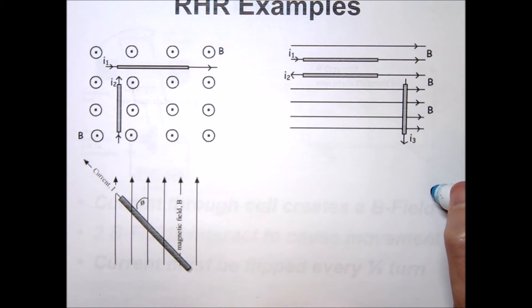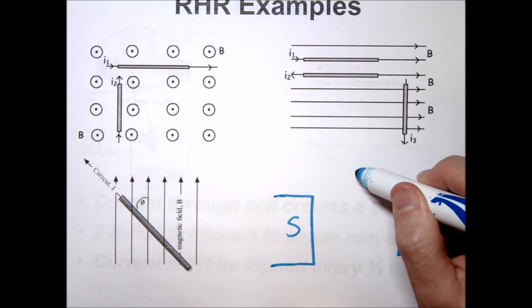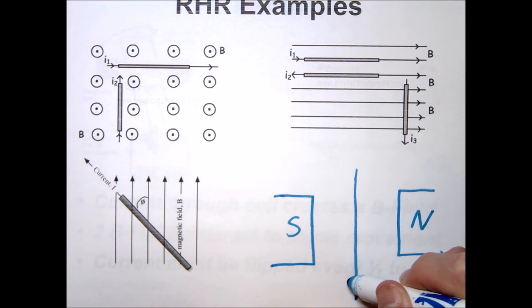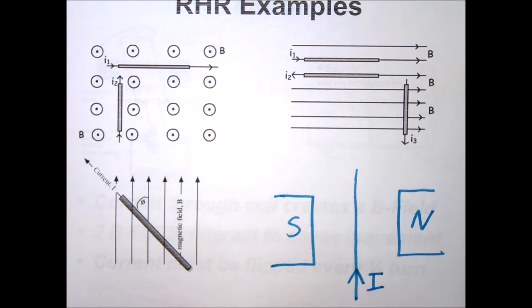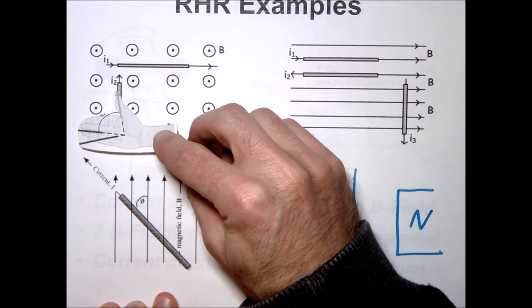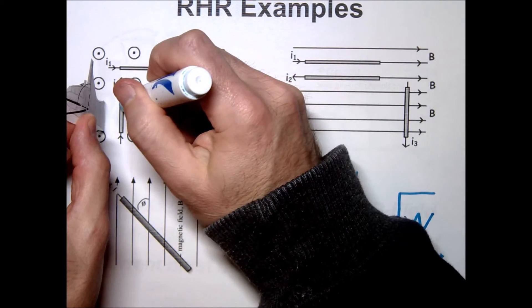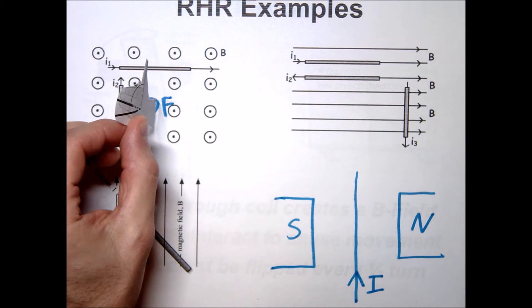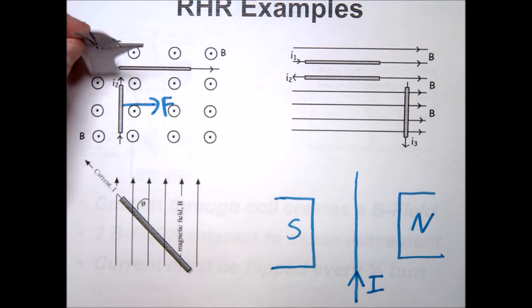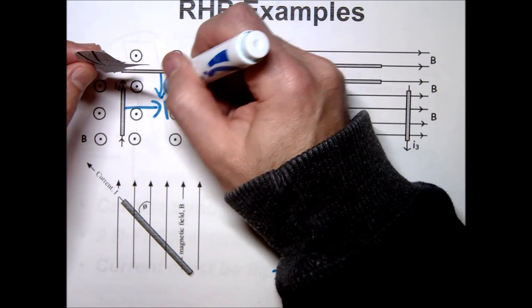Let's look at some examples. Imagine two permanent magnets — north and south — with a wire placed between them carrying current in a certain direction. For the first case: thumb follows the current, the B field is dotted meaning it's coming out of the page, so rotating the hand gives a force pointing to the right. For the next case, with current pointing up and the B field oriented accordingly, the force moves in a different direction.